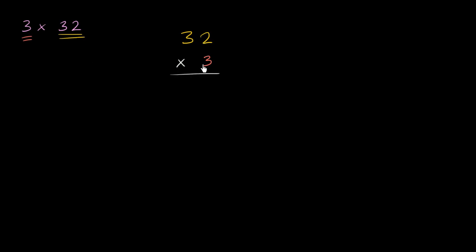And this is essentially a way of saying the same thing. You could read this as 32 times 3. But 32 times 3 is the exact same value as 3 times 32. It doesn't matter what order you multiply in.